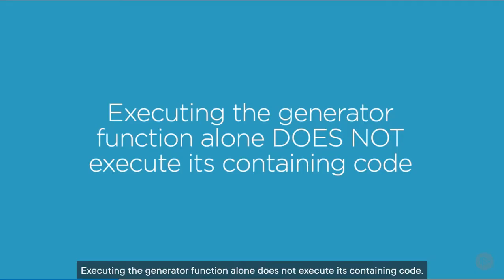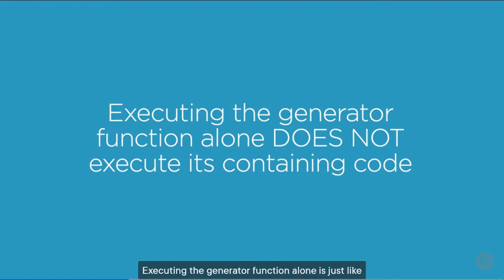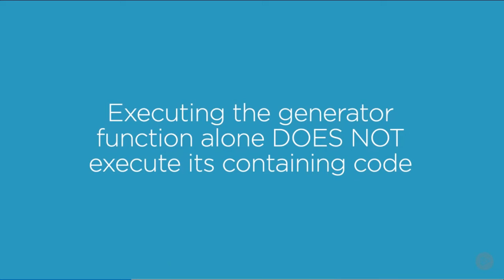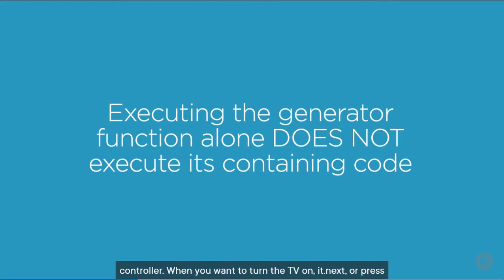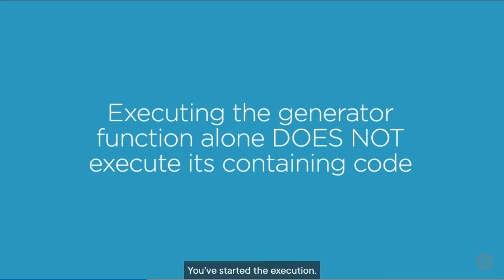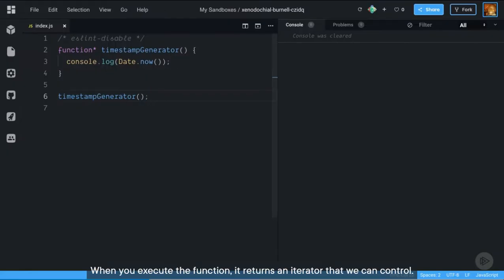Executing the generator function alone does not execute its containing code. It's like if you wanted to watch a TV that is currently turned off. Executing the generator function alone is just like you picking up the remote control — you haven't turned the TV on yet, you've just been given the controller. Executing the generator returns an iterator, or the controller. When you want to turn the TV on, call it.next, or press power on the controller. Now you've started watching TV. When you execute the function, it returns an iterator that we can control.